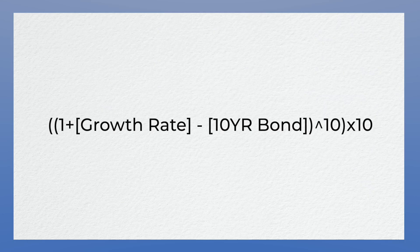Here's the formula: we take (1 + growth rate − 10-year treasury bond rate) to the 10th power, times 10. If this is confusing, at the end I have something that'll make it really easy for you.